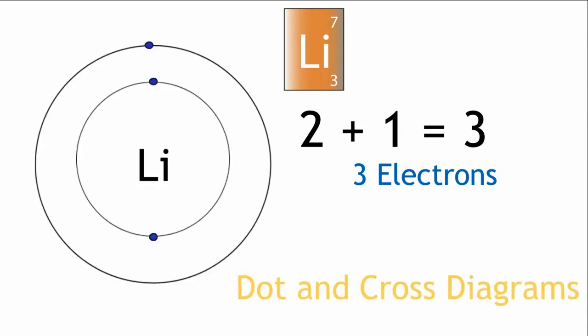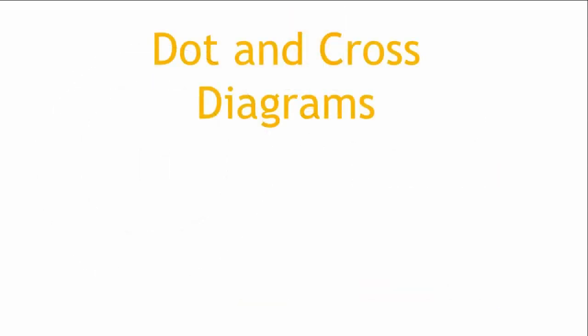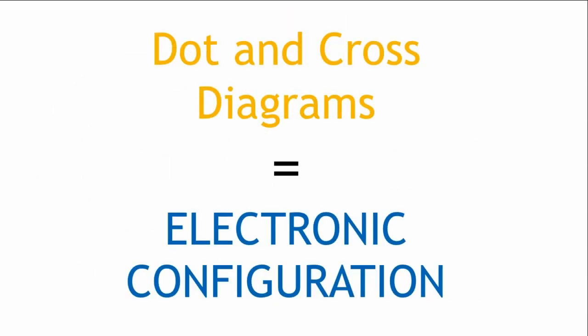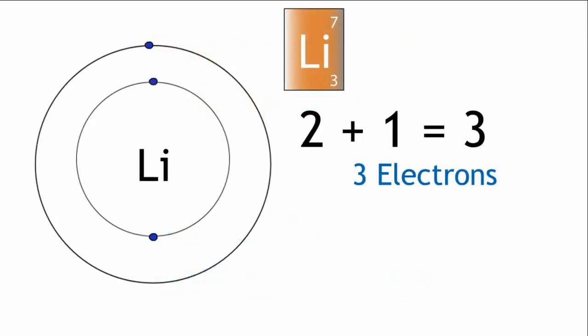These diagrams are called dot and cross diagrams, and they are used to show the electronic configuration of an element. You need to be able to draw these diagrams, as well as being able to write the electronic configuration in a written form. For lithium, this will be written as Li 2,1.